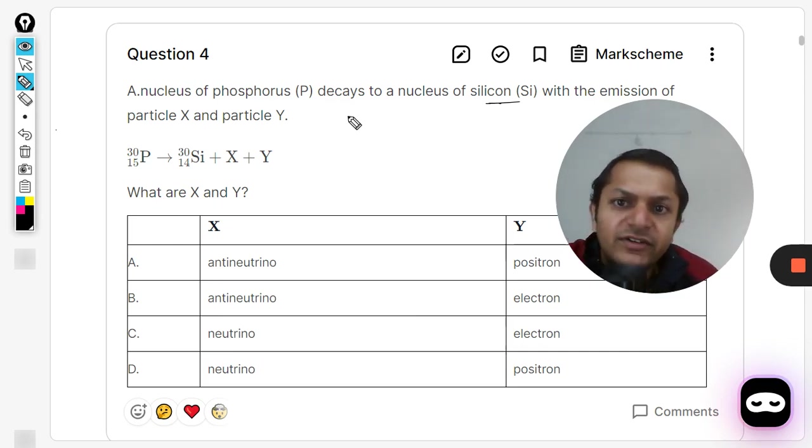Whenever there is an alpha decay, the atomic mass number will reduce by four and atomic number will reduce by two. Now if I talk about beta minus, the atomic mass number does not change, it remains the same, but the new atomic number increases by one in beta minus.